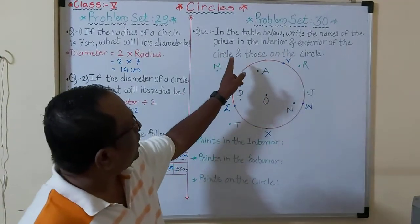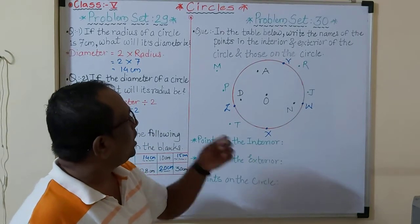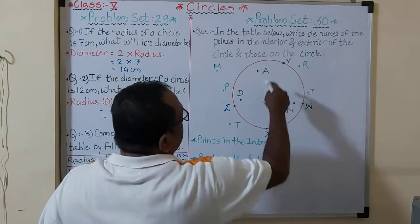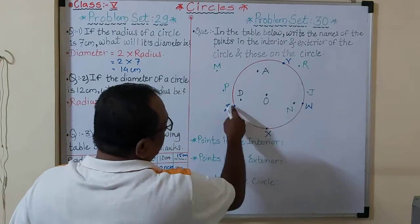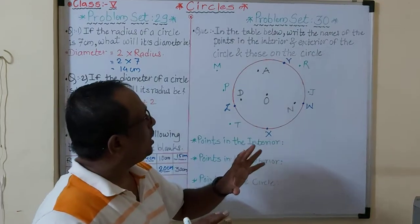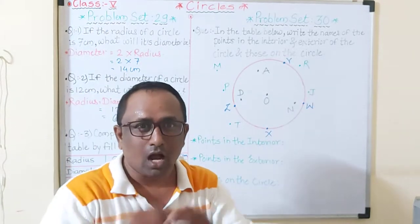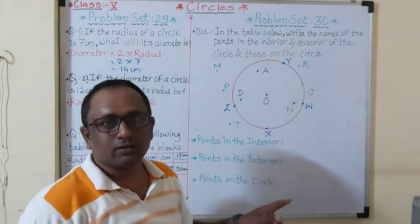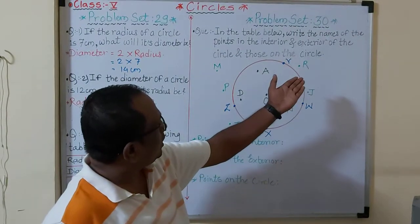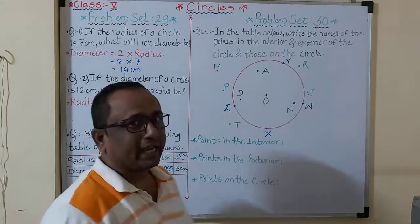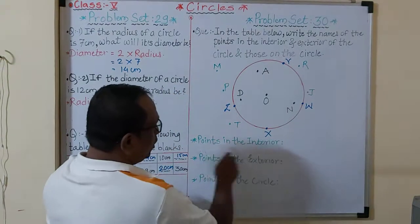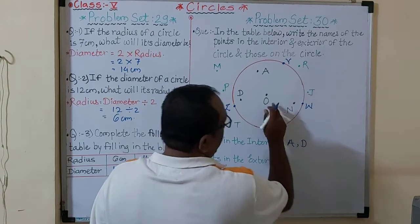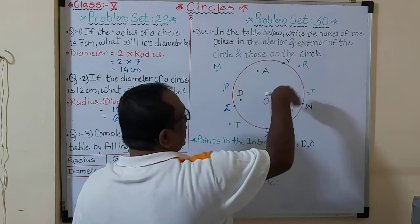Write the names of the points in the interior and exterior of the circle, and those on the circle. Here, some points are on the circle. The green-colored points are outside the circle — these are exterior points. Some are inside — those are called interior points. Points inside the circle are interior: write A, D, and O — O is the center of the circle, so it is interior.